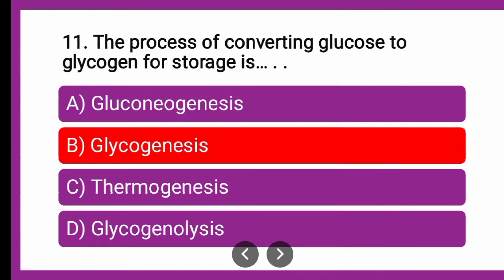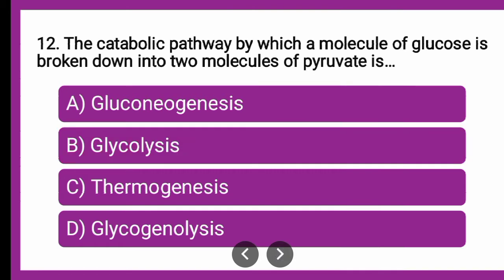The process of converting glucose to glycogen for storage is glycogenesis. Next question number 12: The catabolic pathway by which a molecule of glucose is broken down into 2 molecules of pyruvate is — if you would have gone through the introductory videos and the complete glycolysis video, then it is very easy for you to answer this question.